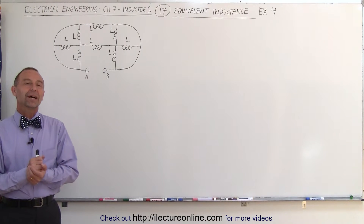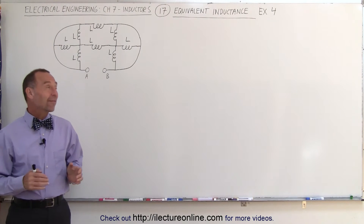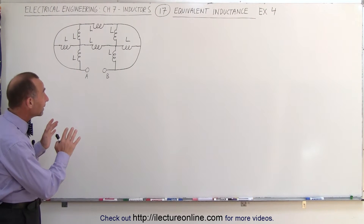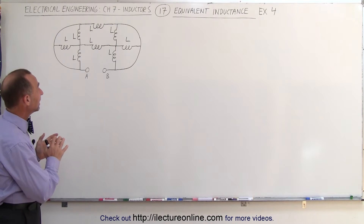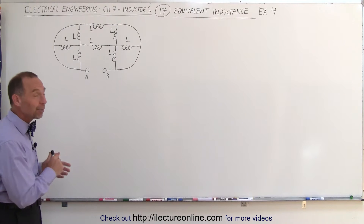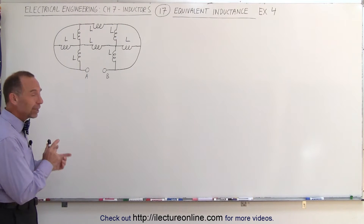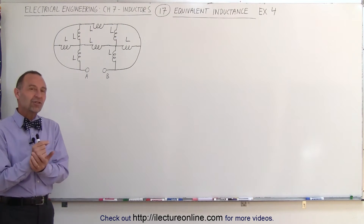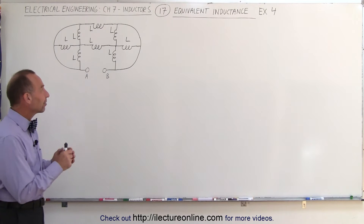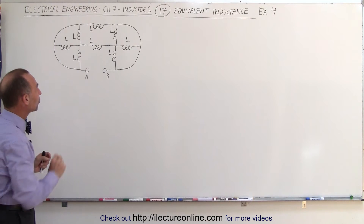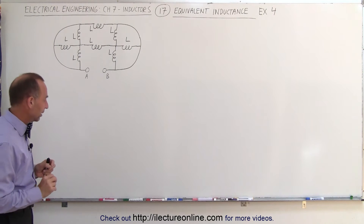Welcome to ElectronLine. Here we have an example circuit that is quite interesting — definitely a little bit more challenging. But we can make it less challenging by realizing that there are actually four branch points to keep track of.